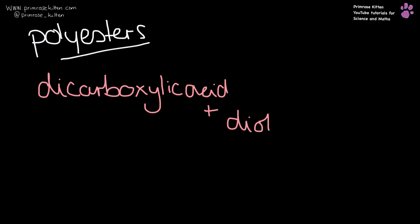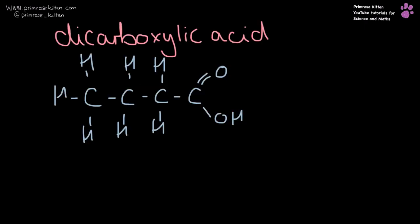When we are talking about polyesters, we are talking about combining a dicarboxylic acid and a diol. Here we have a carboxylic acid with just one functional group over here, and this is butanoic acid because it's got four carbons.